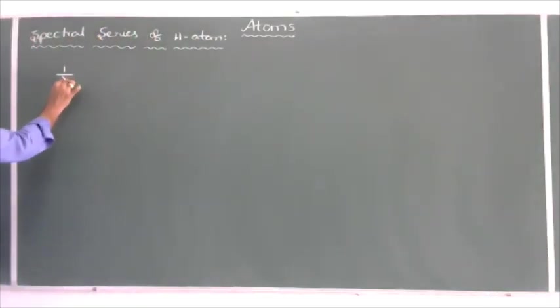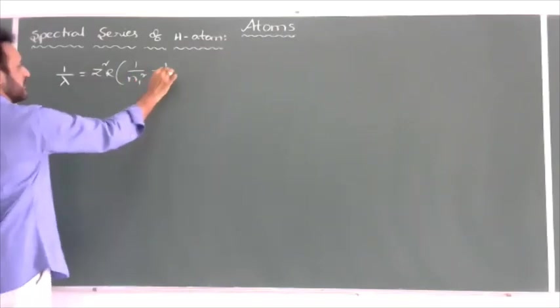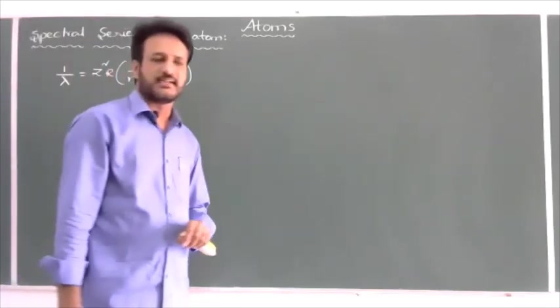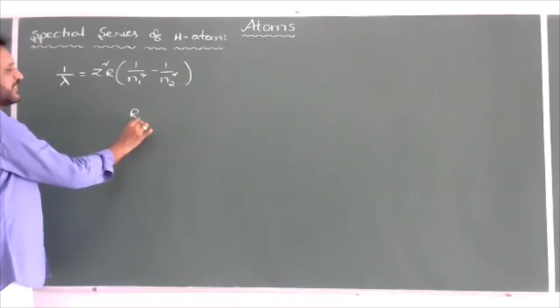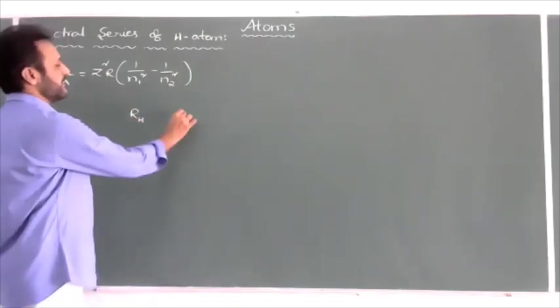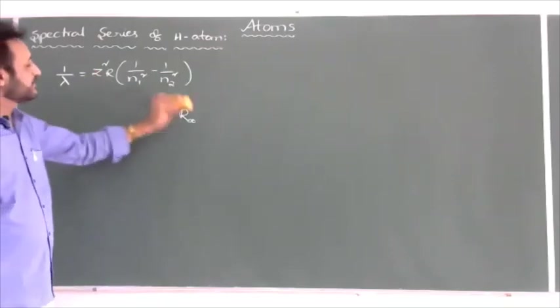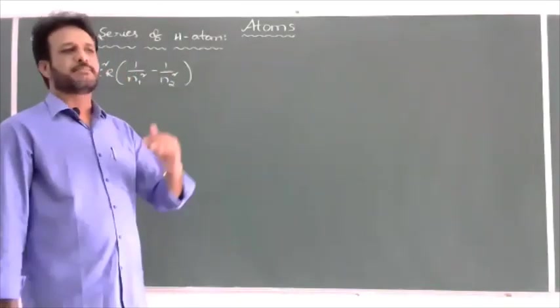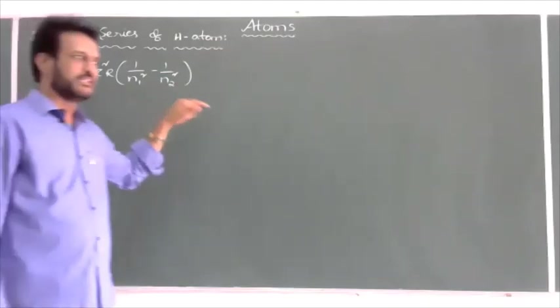In the last class we gave the Rydberg formula: 1/λ = Z² × R × (1/n₁² − 1/n₂²). In this formula, Z represents atomic number and R is the Rydberg constant. For a hydrogen atom we can write the Rydberg constant symbol as R_H; for any other atoms we represent it as R_∞. n₁ is the principal quantum number of the lower energy state and n₂ is the principal quantum number of the upper or higher energy state. λ is the wavelength of the spectral line — the wavelength of electromagnetic radiation emitted when the electron jumps from the higher to lower orbit.